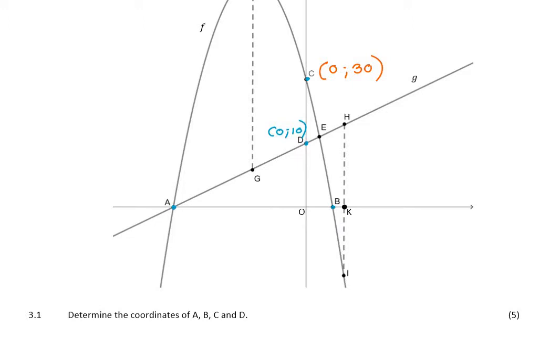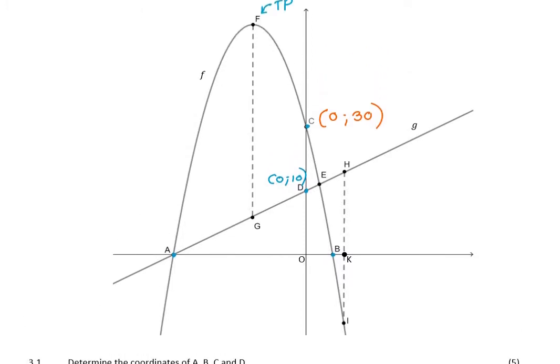So, first question says, determine the coordinates of a, b, c, and d. Now, I've already found c and d, so I'm not going to bother with them. c is (0,30) and d is (0,10). So, all I need is a and b. And what were a and b again? The easiest way to find them both would just be to find the x-intercepts of the parabola.